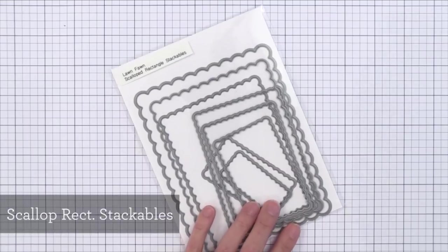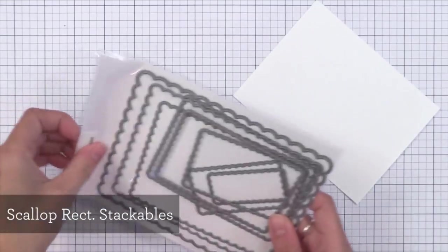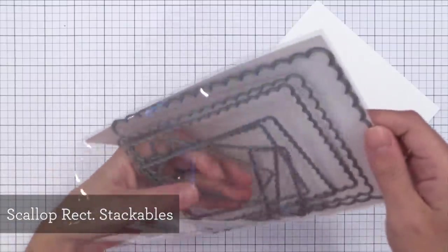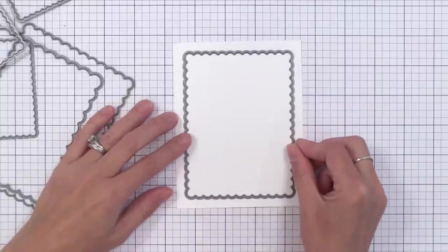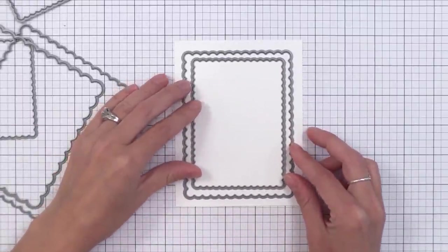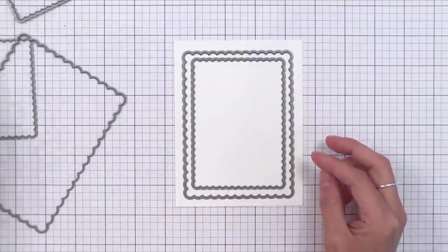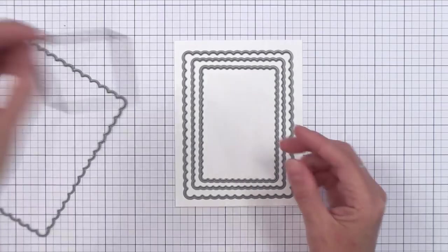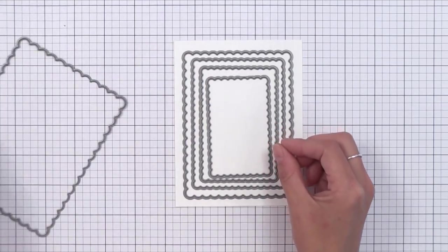Okay now for the dies themselves. This is the Scalloped Rectangle Stackables. Now Lawn Fawn's good about putting a lot in these sets. So you really get good value. A lot you can do with these dies. I wanted to show you how the sizes work on a four and a quarter by five and a half inch note card. That's the most typical note card size and that's what that white piece is that you see that I'm stacking these all on. So you can see how these stack on here nicely.